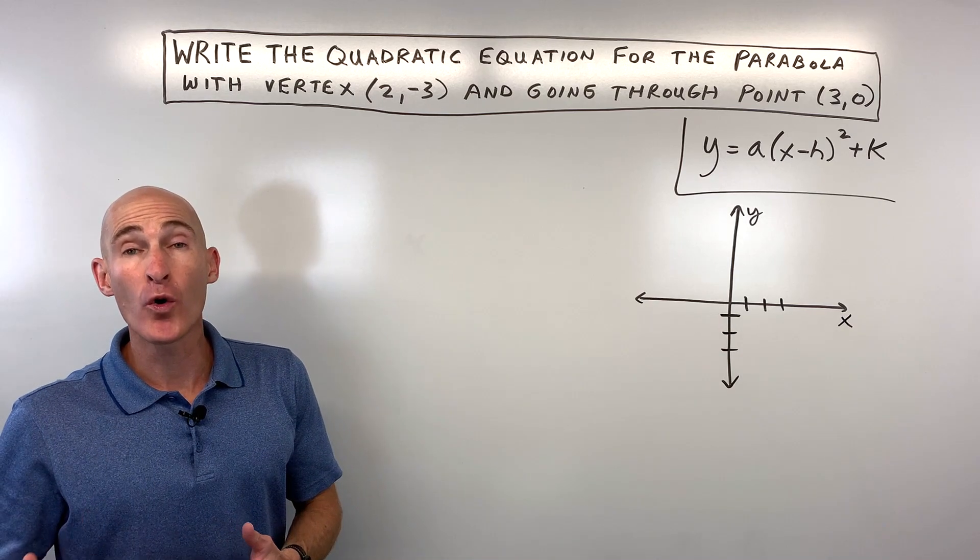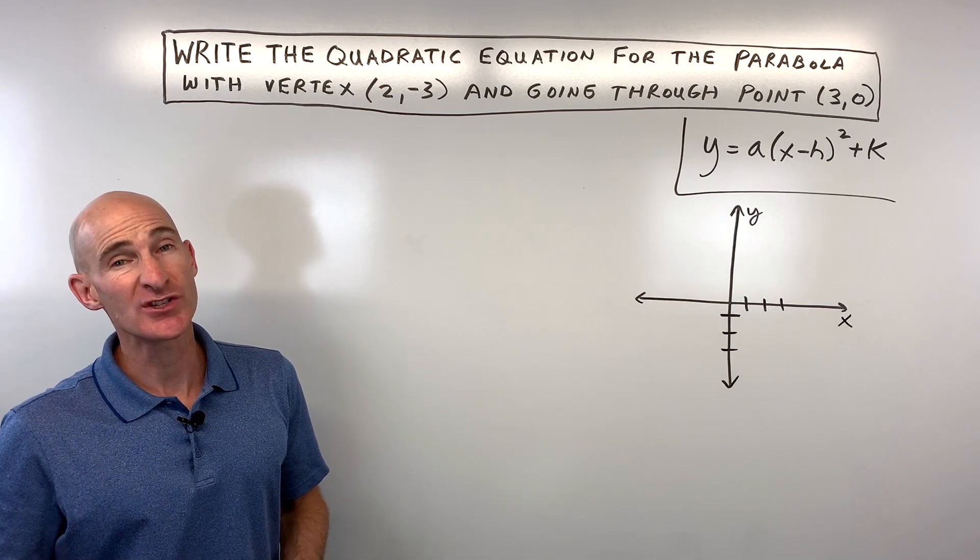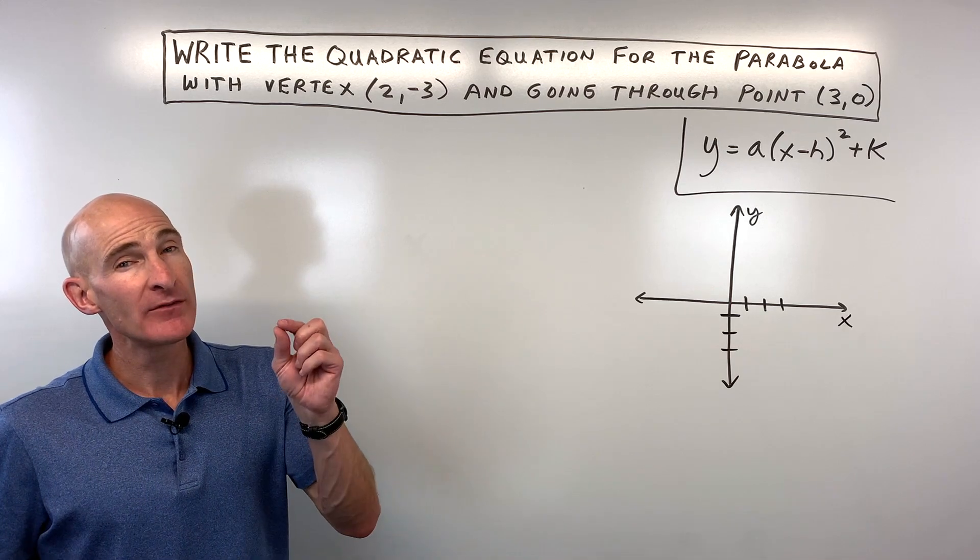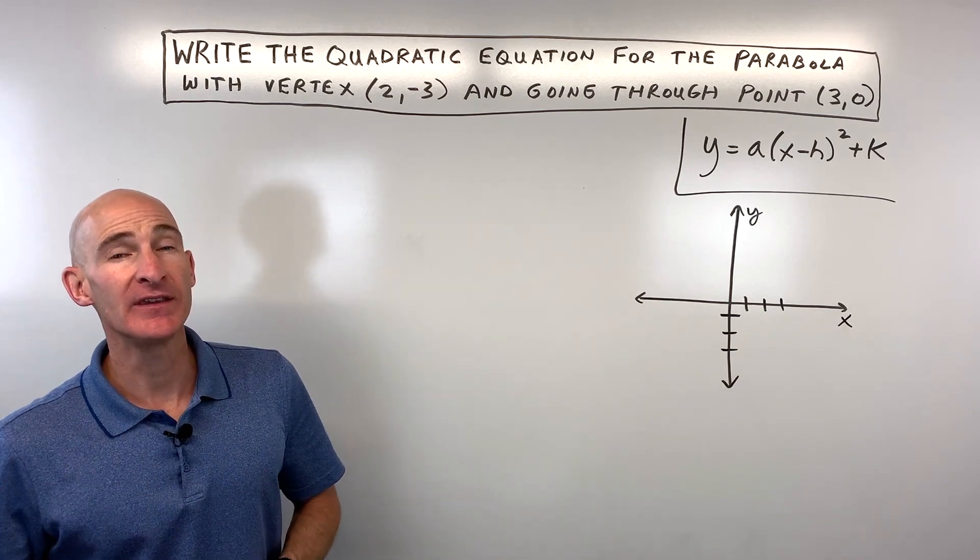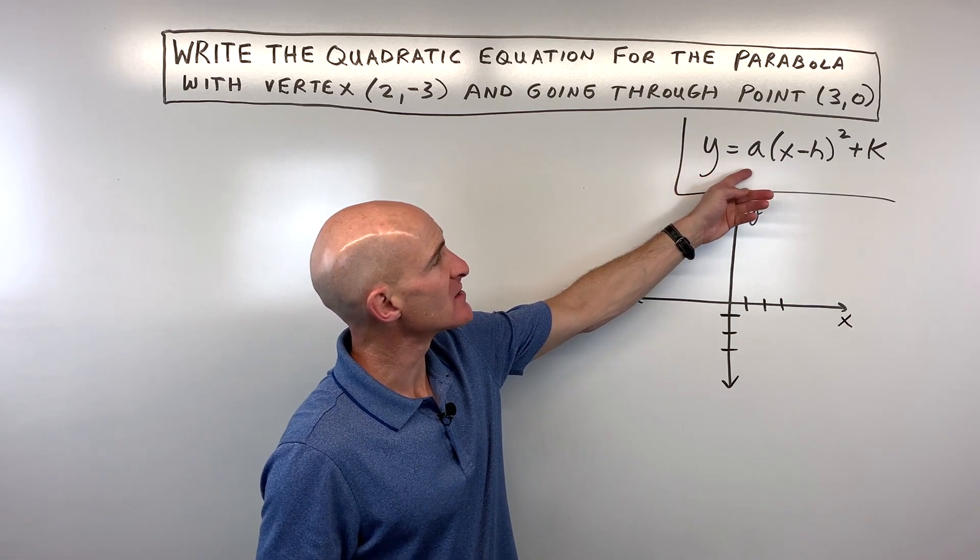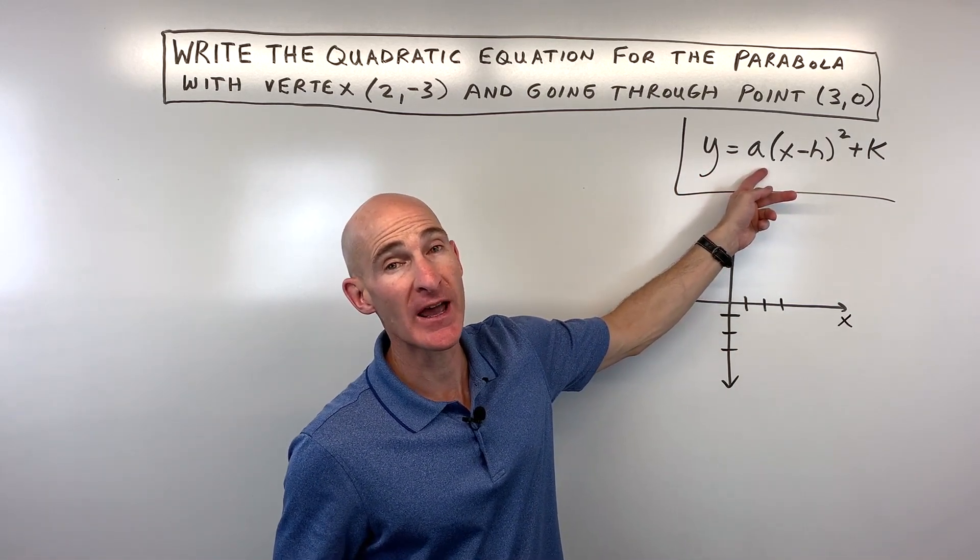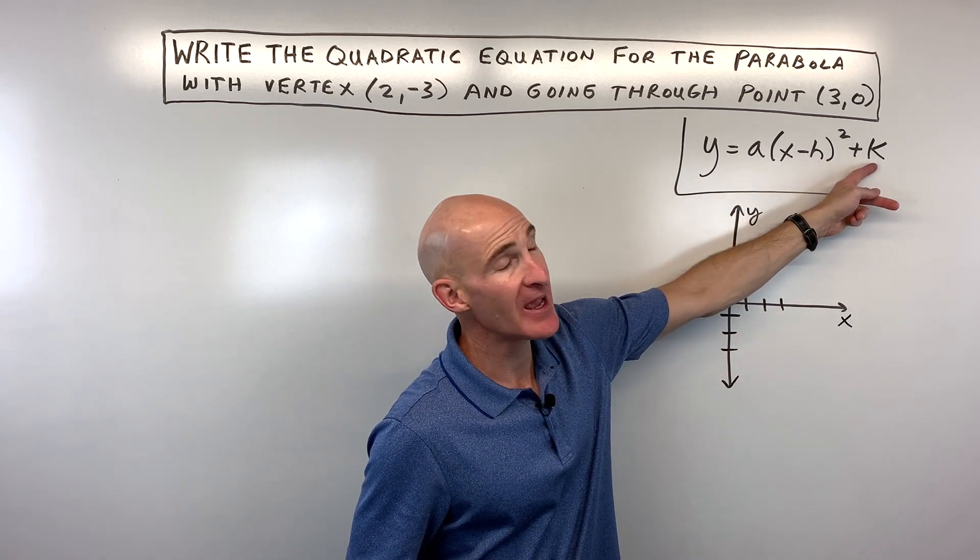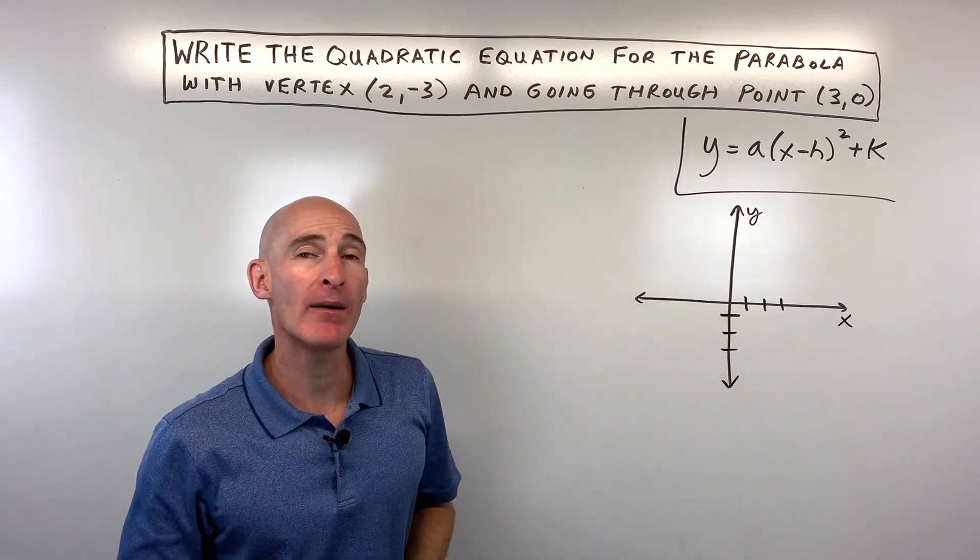In this video, you're going to learn how to write the equation of a quadratic, which is a parabola, but we're going to be given a vertex and a point that the graph goes through. So the equation that you're going to want to be familiar with is this quadratic equation here in vertex form, where h and k are the vertex, or the point where that parabola bends.